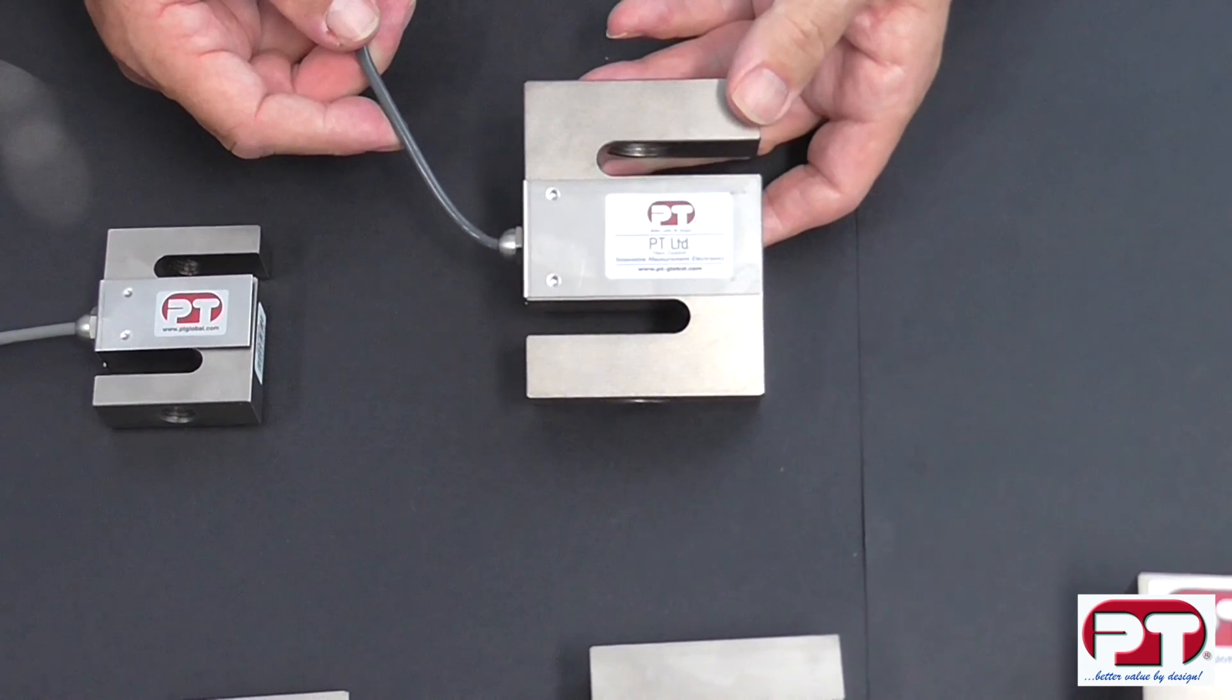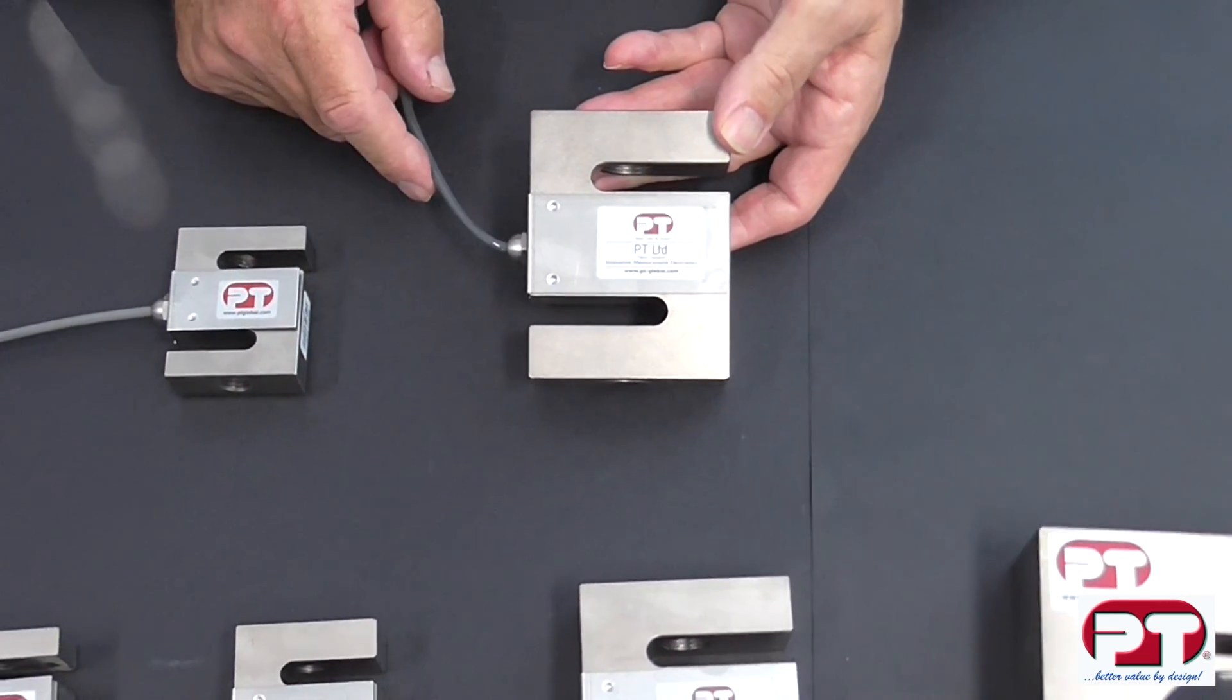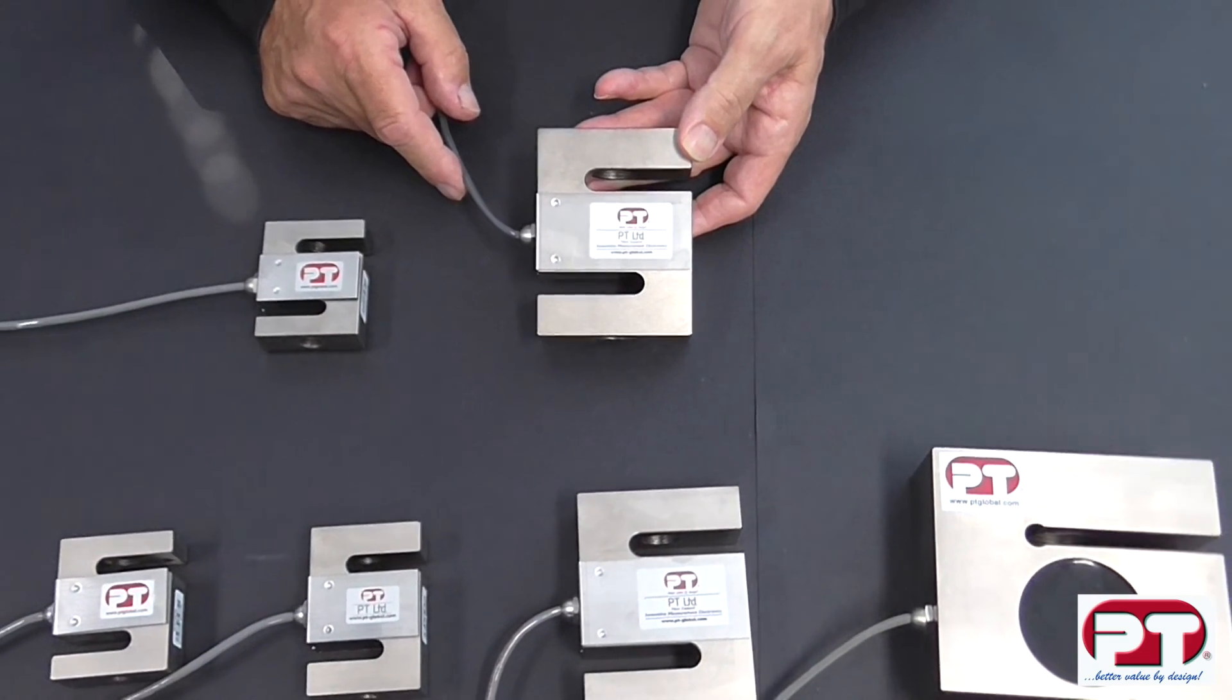Examples of applications: It is used in both tension and compression weighing. Ideal for hanging tanks, bin hoppers, crane weighing, and material testing applications.